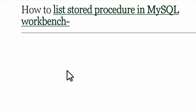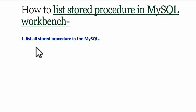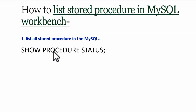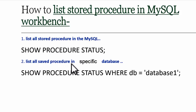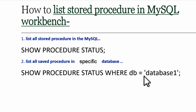Next is how to list stored procedures in MySQL Workbench. To list all stored procedures, use the SHOW PROCEDURE STATUS statement. To list all saved procedures in any particular database, use: SHOW PROCEDURE STATUS WHERE db = 'database_one'. Here you can see the list of procedures.